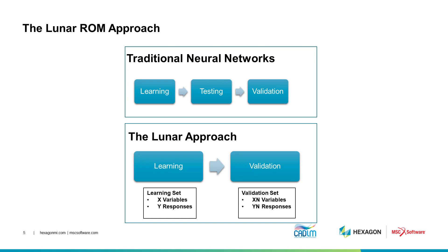The learning set includes X variables and Y responses. Once learning has been conducted, a new set of X variables (XN) will be used for testing, and a measure of error is conducted on YN, a new set of responses. Beyond this point, any new XN can be explored to obtain a new YN. We call this the offline phase, since no further information is required and the original X and Y are no longer needed.